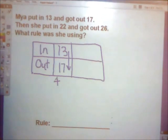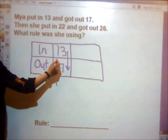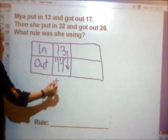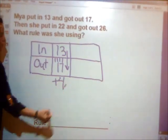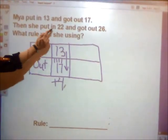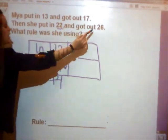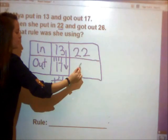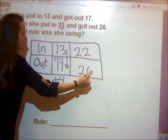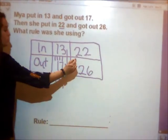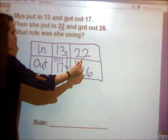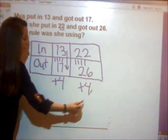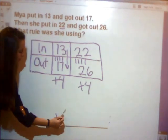Let's draw tally marks to see how many. 13, 14, 15, 16, 17. I added 4. Then she put in 22 and got out 26. Let's try this one and see if we're correct. 22, 23, 24, 25, 26. Our rule is adding 4.